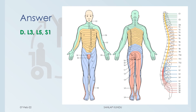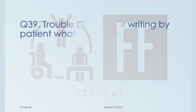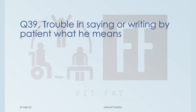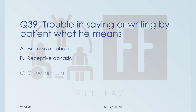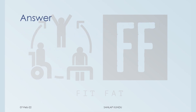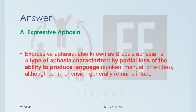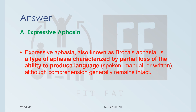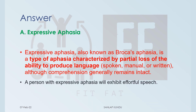Question number 39: trouble in saying or writing what a patient means is: A) expressive aphasia, B) receptive aphasia, C) global aphasia, D) anomic aphasia. The correct answer is option A, expressive aphasia, also known as Broca's aphasia. It is characterized by partial loss of the ability to produce language — spoken, manual, or written — although comprehension generally remains intact, and the person will exhibit effortful speech.